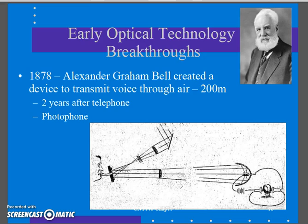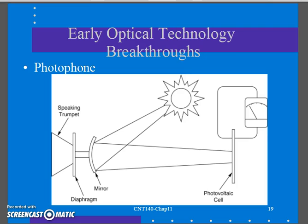And here's Bell saying, 'I can send voice across a wire — I wonder if I can send voice using light.' So he developed something called the Photophone. Here's kind of a rough schematic. He took light and reflected it using a little mirror.